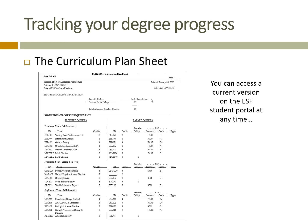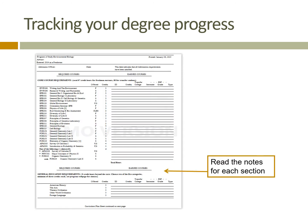Each curriculum plan sheet is a little different, but this gives you an idea of what it's going to look like to keep track of what you need as you progress towards graduation. You can see this at any point in the student portal. Some of the programs have different note sections, so you want to make sure that you really pay attention to those carefully, and those will be carried over into the new audit system.